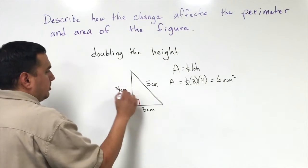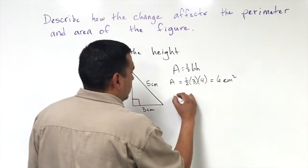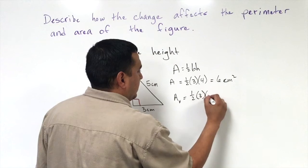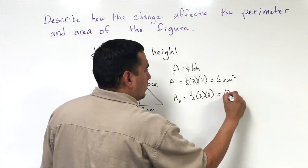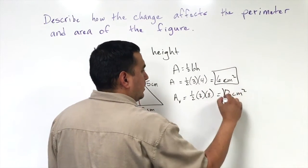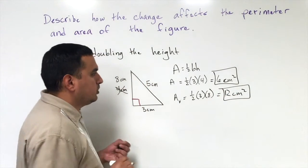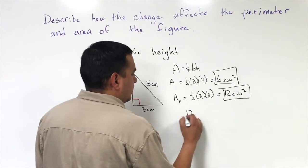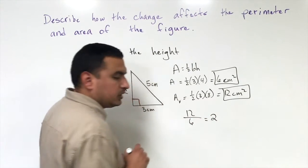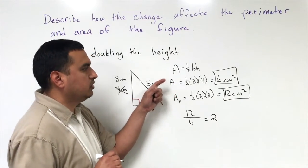Once I double the height, remember this is going to change to 8 centimeters. So the area of the new triangle is going to be one-half of 3 times 8, which is 12 centimeters squared. Comparing 12 to 6 and reducing that gives me 2, so the new area is twice as big as the original area.